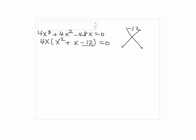By factoring x squared plus x minus 12, we have 4x times x minus 3 times x plus 4 equals 0.